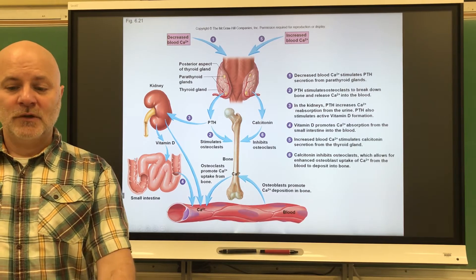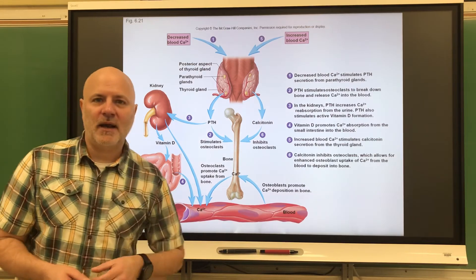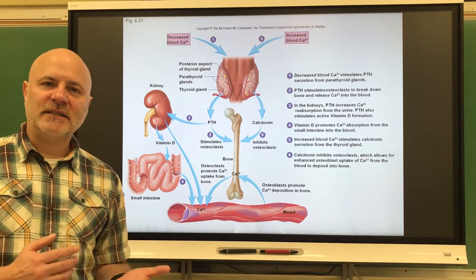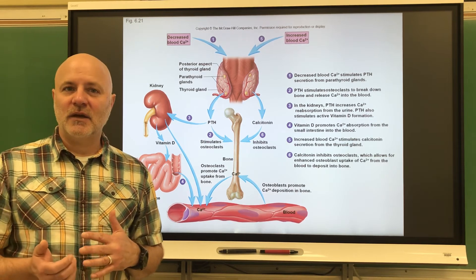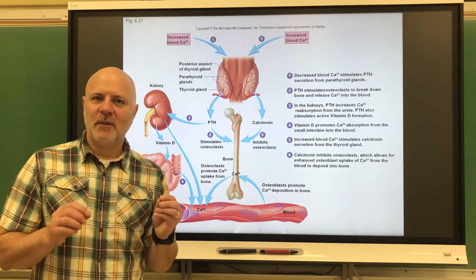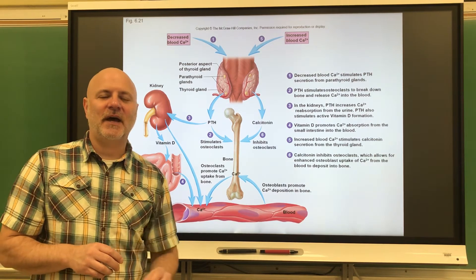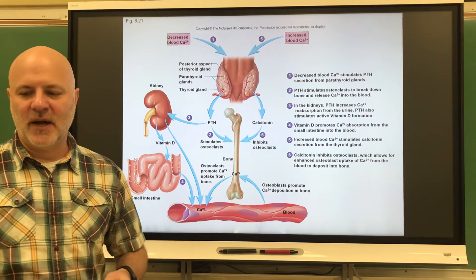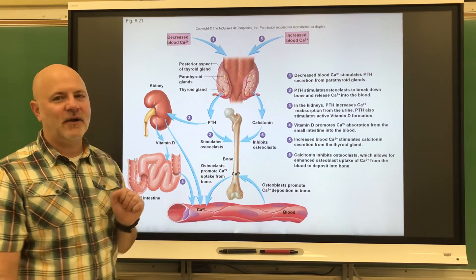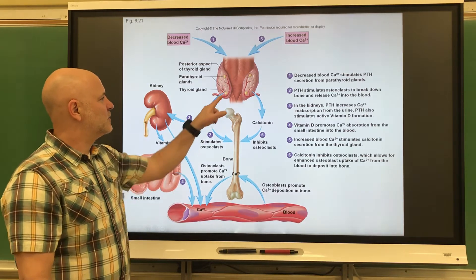Next is the thyroid gland. Thyroid hormones stimulate the replacement of cartilage with bone at the epiphyseal plates, stopping bone growth sooner. The thyroid also secretes calcitonin, which inhibits bone breakdown — it inhibits osteoclasts and stimulates osteoblasts — effectively building bone and taking calcium out of the blood.